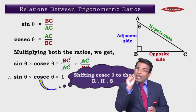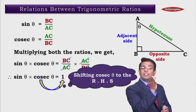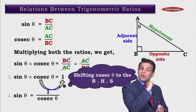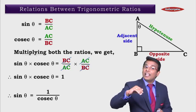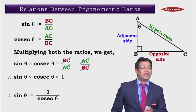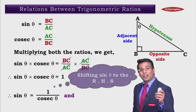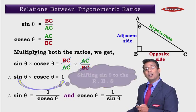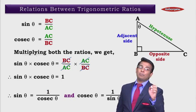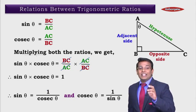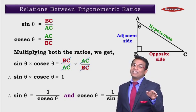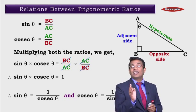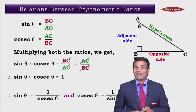Now let's take cosec theta onto the right-hand side. If we shift cosec theta, we get sine theta is equal to 1 upon cosec theta. Similarly, we can shift sine theta onto the right-hand side, giving us cosec theta is equal to 1 upon sine theta. So we got a relation: sine theta is equal to 1 upon cosec theta and cosec theta is equal to 1 upon sine theta. That means sine theta and cosec theta are reciprocals of each other.